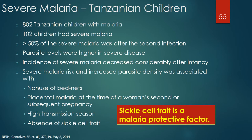A 2014 article from the New England Journal of Medicine studied 802 Tanzanian children with malaria, of whom 102 had severe malaria. More than half of severe malaria cases occurred after the second malaria infection. Generally parasite levels were higher when children had severe versus mild disease, but not consistently. The incidence of severe malaria decreased considerably after infancy. Severe malaria risk and increased parasite density was associated with non-use of bed nets, placental malaria at the time of a woman's second or subsequent pregnancy, high transmission season, and absence of sickle cell trait — sickle cell trait is a malaria protective factor.